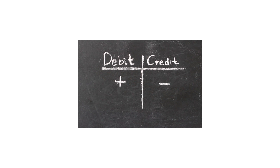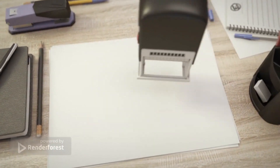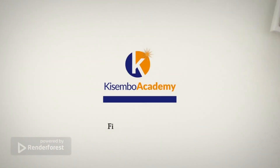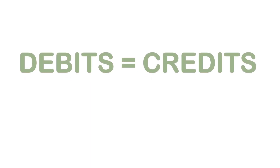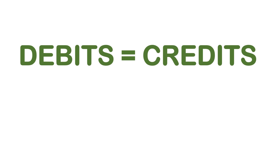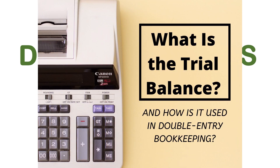For every debit entry, there must be a corresponding credit entry. This means that if a company continues to do double entry for their whole year, at the end of the year, the total number of debits should be equal to the total number of credits. But how do we make sure that the total number of debits is the same as the total number of credits? We are able to ensure that these two are the same by preparing something we call a trial balance.